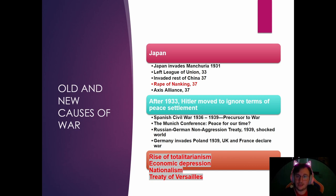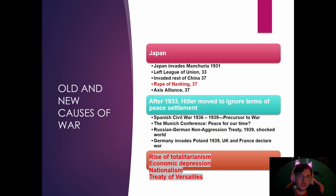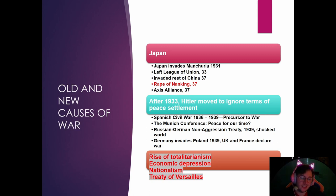Japan joined Hitler in 1937. Moving back to Europe: in 1933 Hitler moved to ignore the terms of the peace settlement. He helped in the Spanish Civil War. The Munich Conference promised 'peace in our time,' but it didn't work. Russia and Germany signed their pact — everyone was shocked — and then Germany invaded Poland. In 1939, the UK and France declared war, which formally started World War II, though they couldn't do much immediately.